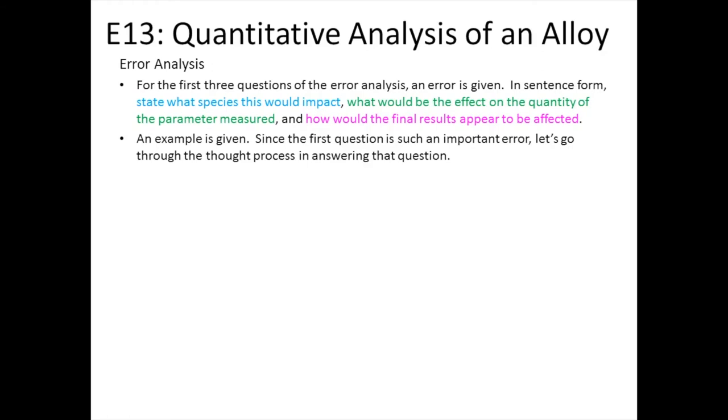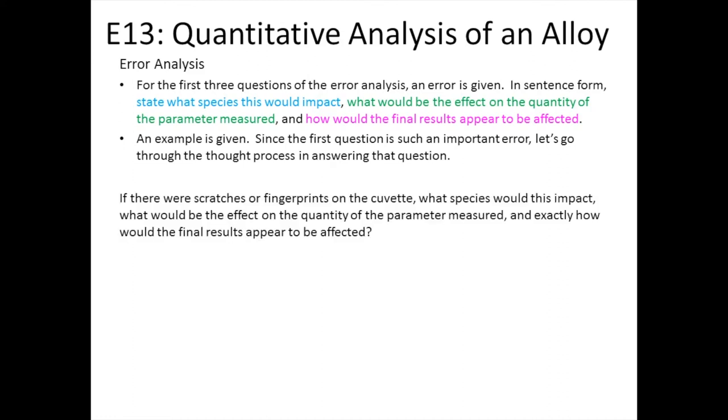For the first three questions of the error analysis, an error is given. In sentence form, state what species this would impact, what would be the effect on the quantity of the parameter measured, and how would the final results appear to be affected. An example is given. Since the first question is such an important error, let's go through the thought process in answering that question. Question one, if there were scratches or fingerprints on the cuvette, what species would this impact? What would be the effect on the quantity of the parameter measured? And exactly how would the final results appear to be affected?